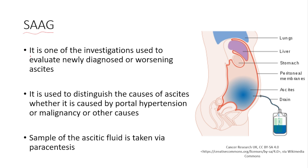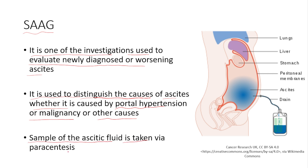The SAAG is one of the investigations used to evaluate newly diagnosed or worsening ascites, and it is used to distinguish the causes of ascites — whether it is caused by portal hypertension, malignancy, or other causes. So it is mainly used to distinguish the causes of ascites. A sample of the ascitic fluid is taken via paracentesis.